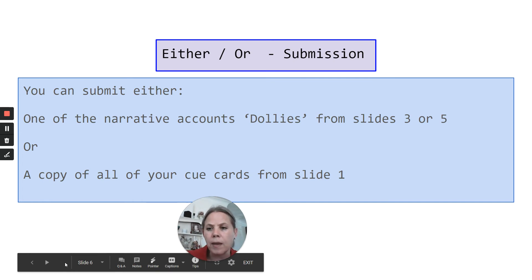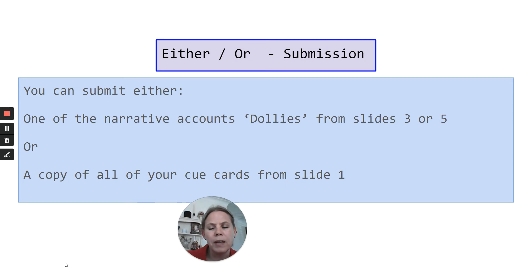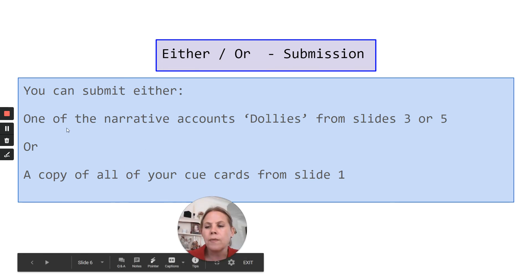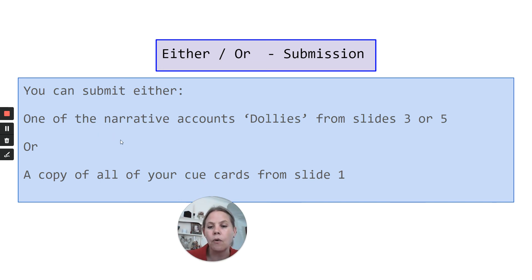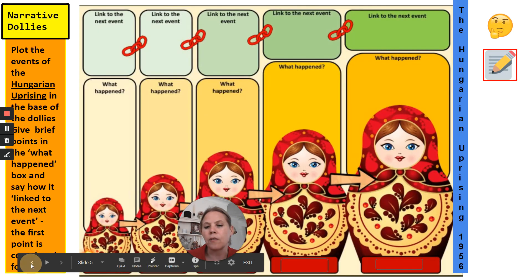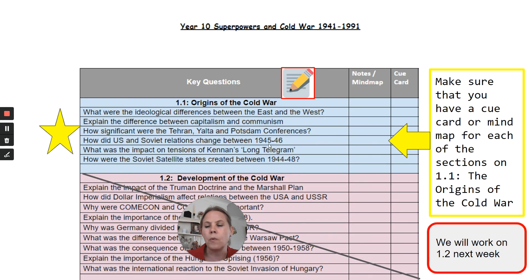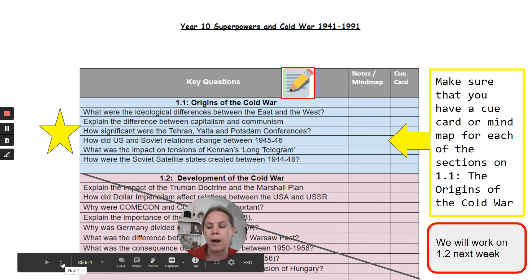Finally, this is what needs to be submitted on Friday. It's an either/or task — you don't have to do all of this, but equally if you wanted to and felt it would be useful, then by all means do all of it. You need to submit on Friday one of the narrative accounts: either the First Berlin Crisis 1948, or the Hungarian Uprising 1956 — one or the other. You can do that as a usual narrative write-up, or if you've printed out the dollies pages and filled them in, you can upload a photo of those. Alternatively, submit a copy of all the cue cards from slide one — that means all your cue cards and mind maps for each of the points. Both options are supportive for exam practice and knowledge building.